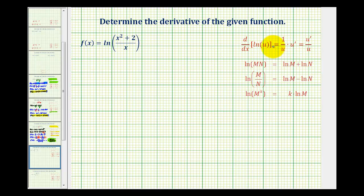But we can avoid having to use the quotient rule if we apply the quotient property of logarithms given here. So we can write the current log as a difference of two logs.